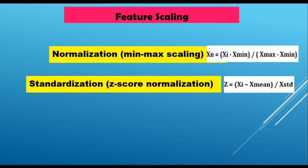In the min-max equation, X_min is the minimum value available in that particular column and X_max is the maximum value. For standardization, the equation is: (Xi - X_mean) / X_std, where X_mean is the average value of that column and X_std is the standard deviation of that column. This equation is also applied to each and every data point individually. Both scalers handle feature scaling automatically — we just need to understand the concept.